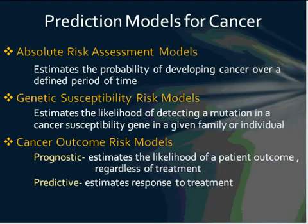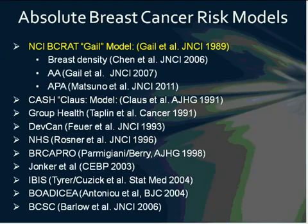I break cancer prediction models into three categories. First, absolute risk assessment models, which estimate the probability of developing cancer over a defined period of time. Second, genetic susceptibility risk models, which estimate the likelihood of detecting a mutation in a cancer susceptibility gene in a given family or individual. Third, cancer outcome risk models, which I divide into prognostic models—estimating patient outcome regardless of treatment—and predictive models for cancer outcomes, estimating response to treatment. Today we're really talking about the first two: absolute risk assessment and genetic susceptibility risk models.